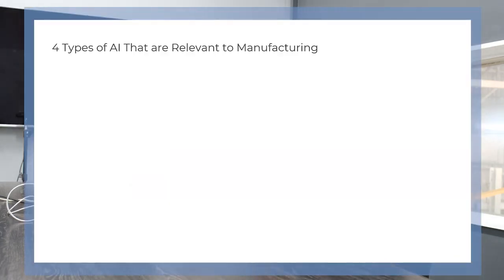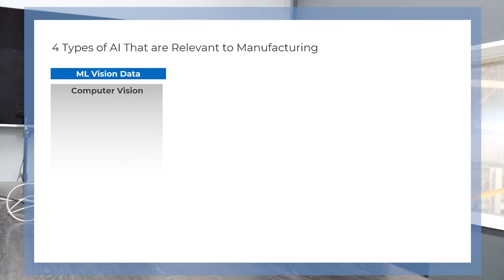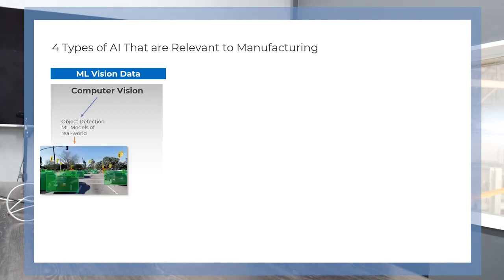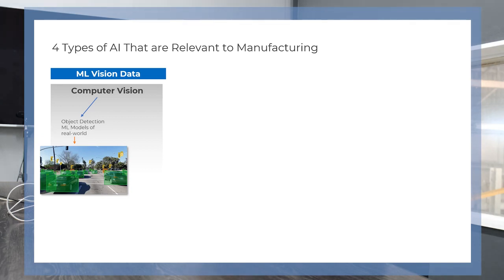Before diving into those examples I just want to talk about the four types of AI that I think are relevant within manufacturing. The first one being computer vision, and within computer vision we've actually got two different types. The first one is what we call object detection — this is for example what's used in self-driving cars where the car is able to detect different objects like traffic lights, different cars, dogs, cats, people, etc.